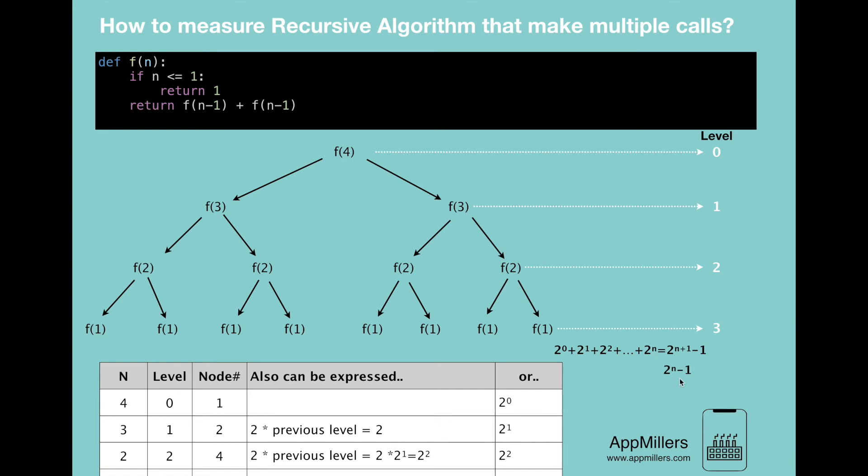And if we eliminate the constant minus 1, we will get 2^n.